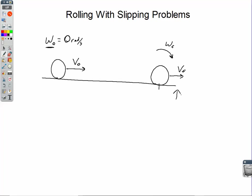Omega is going to increase and the linear velocity is going to decrease. The free body diagram for the forces acting on the bowling ball shows us why. We've got mg acting and the normal force acting. The ball is slipping along the floor and kinetic friction is acting opposite the direction of motion. mg and the normal force don't apply any torque, but kinetic friction does — and that kinetic friction is going to increase omega.